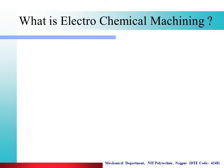Now the question will arise in your mind: what is Electrochemical Machining? As the name suggests, 'Electro' means electrical energy and 'chemical' means chemical energy. In this process we take a combination of both energies and perform machining — that means we remove metal from the workpiece. This is called Electrochemical Machining.